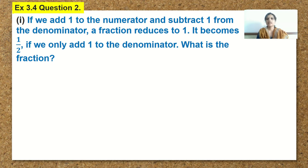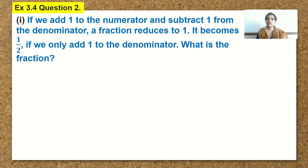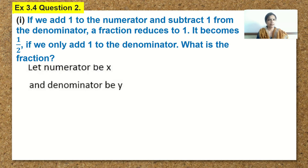Can you recollect that the same type of sum we have done in the substitution method? The way of putting up the equations is exactly similar. Only we will be using the elimination method to find the value of x and y. We will begin our sum by considering the numerator as x and the denominator as y, so the fraction will be x upon y.